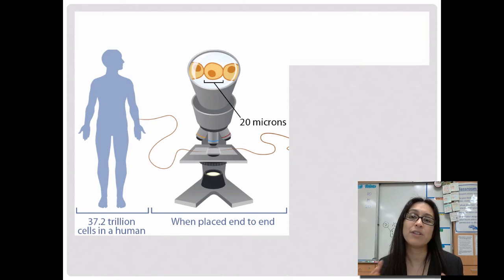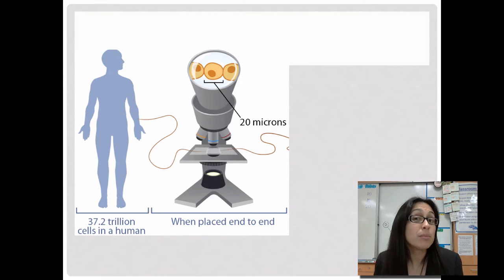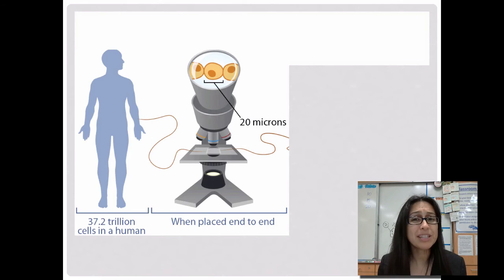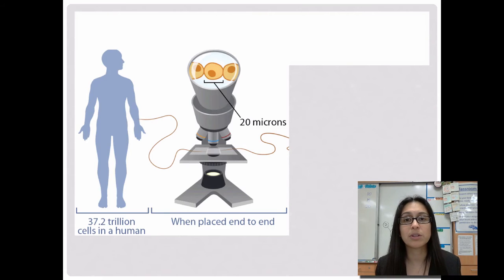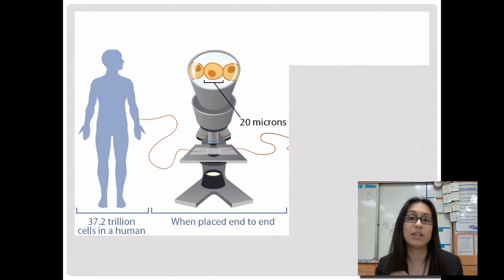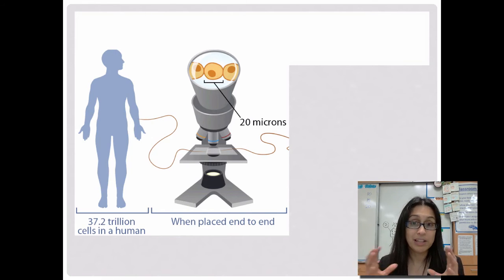All the cells in the body have to communicate with each other and work together as one. If cells don't work together, problems often result. For example, cancer is a really good example of how when cells don't work together, it causes problems. A cancerous cell no longer works together with or communicates with the other cells — it becomes selfish, only caring about getting nutrients for itself, and it couldn't care less about the other cells around it.